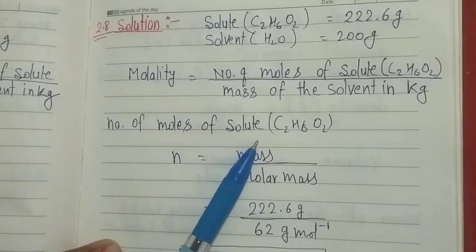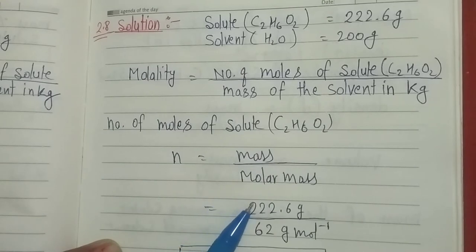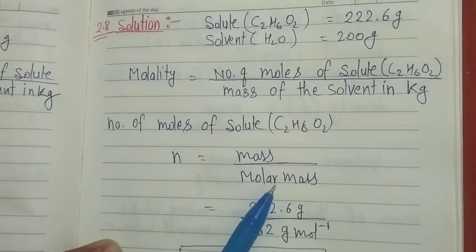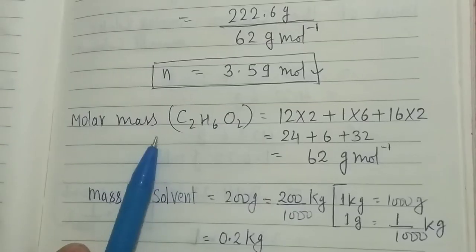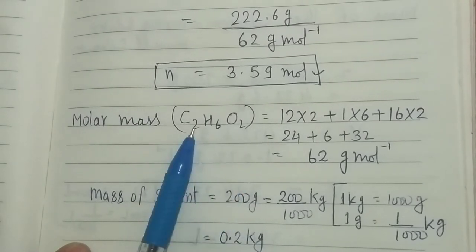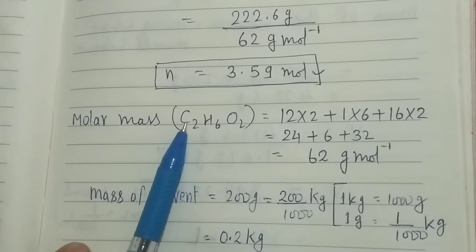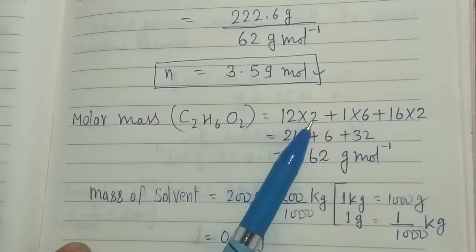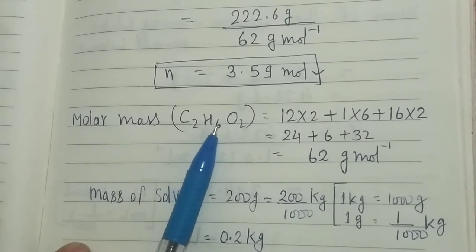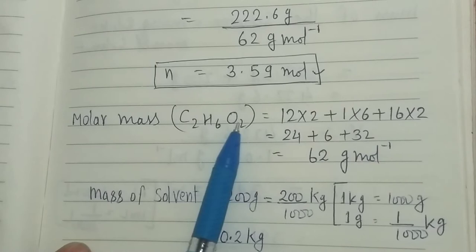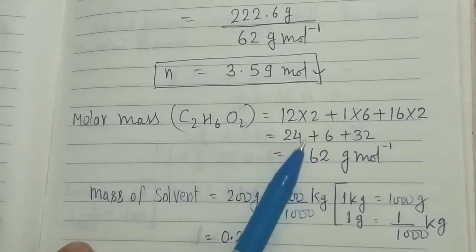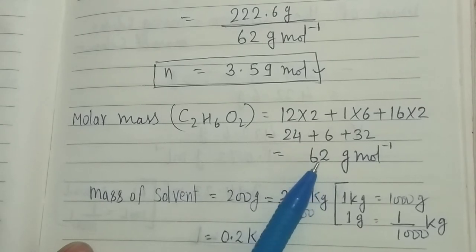The number of moles of solute equals mass divided by molar mass. The mass of ethylene glycol is given as 222.6 grams. The molar mass of ethylene glycol is 62 grams per mole. We calculate this as: carbon's atomic mass is 12 multiplied by 2, plus hydrogen's atomic mass 1 multiplied by 6, plus oxygen's atomic mass 16 multiplied by 2, which gives 62 grams per mole.